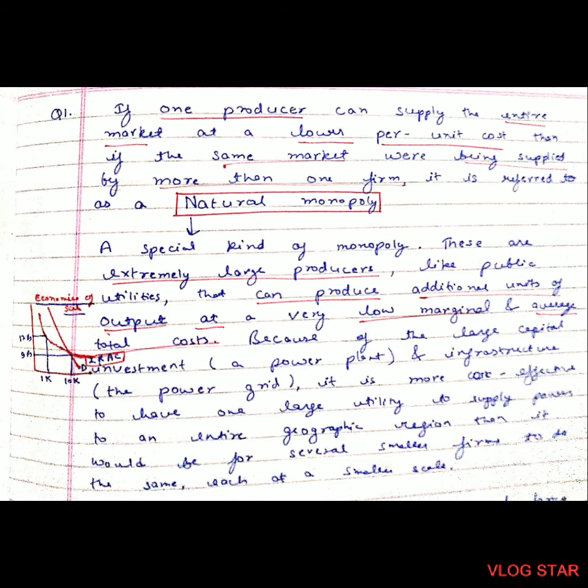Natural monopoly is a special kind of monopoly. These are extremely large producers like public utilities that can produce additional units of output at a very low marginal and average total cost. Because of the large capital investment and infrastructure, it is more cost effective to have one large utility supply power to an entire geographic region than for several smaller firms to do the same at a smaller scale.